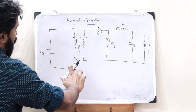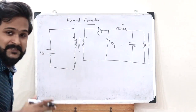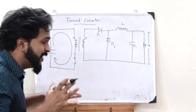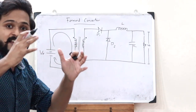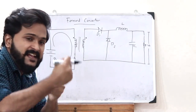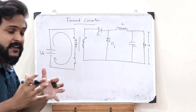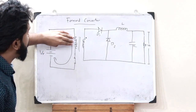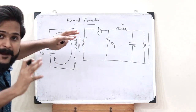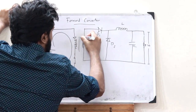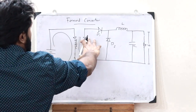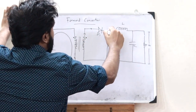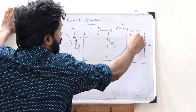Now let us see the working of this particular forward converter. First case: let us assume that the switch is in the ON condition. When the switch is ON, a primary current starts flowing. This primary winding of the transformer acts as an inductor, so energy starts building inside the magnetic field of this winding, creating a polarity of plus-minus and thereby getting charged. Since the same dot convention applies, the same polarity is induced onto the secondary winding according to mutual induction, and current starts flowing through the inductor.